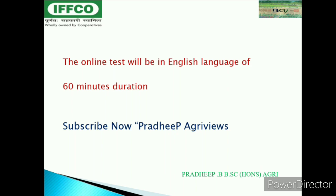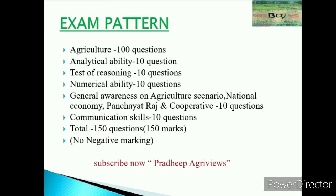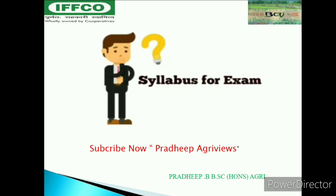This is an online test conducted in English language, with a total duration of 60 minutes. The exam pattern includes: Agriculture — 100 questions, Analytical Ability — 10 questions, Test of Reasoning — 10 questions, Numerical Ability — 10 questions, General Awareness on agriculture, national economy, Panchayati Raj and cooperative — 10 questions, and Communication Skills — 10 questions. Totally 150 questions. There will be no negative marks.